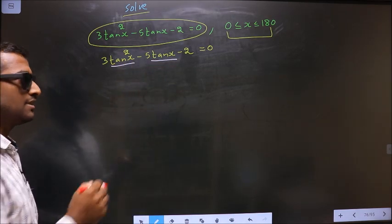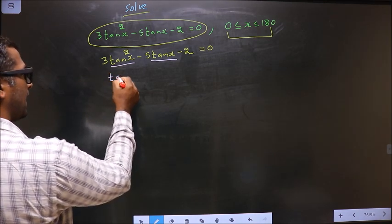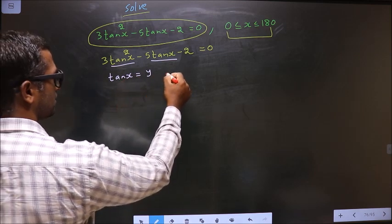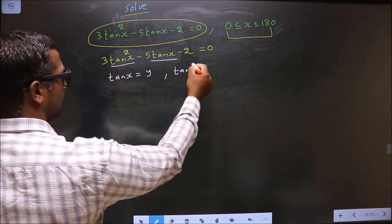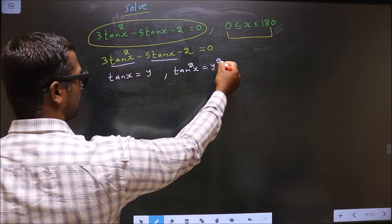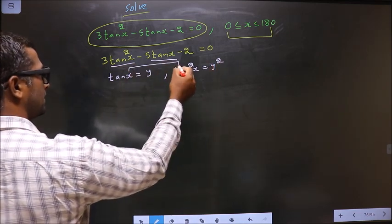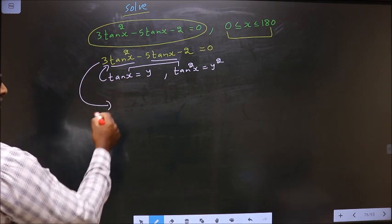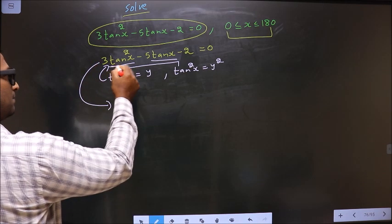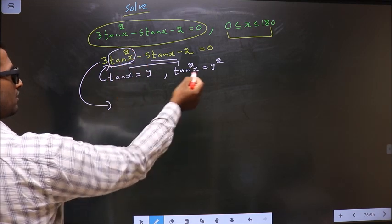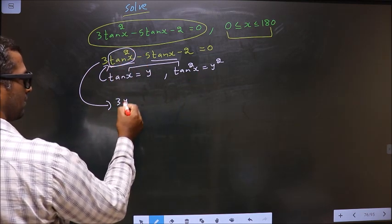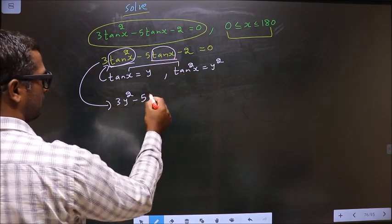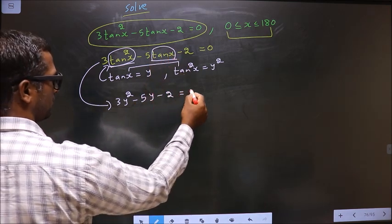So what we do is we take tan x to be y. Now you do the square on both sides. You get tan squared x equal to y squared. Now you replace these two in this equation. This equation now becomes, in place of tan squared x, y squared, in place of tan x, y minus 2 equal to 0.